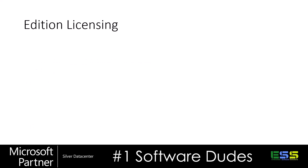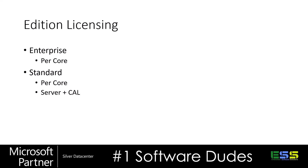These editions are all licensed slightly differently. Express and Developer we've already touched on. For Enterprise and Standard: Enterprise is licensed per core. Standard can be either per-core licensed or use a Server plus CAL model, and we'll get into what each of those means in the next slides.